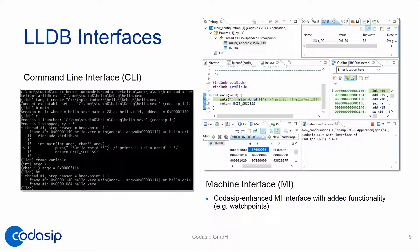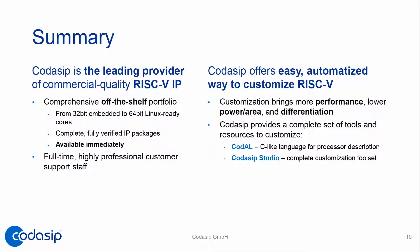A nice feature in LLVM 8 is that code in the CLI is nicely syntax-highlighted — variables appear in one color, keywords in another — making command-line debugging much easier. The second interface is MI, the machine interface, needed to talk to IDEs like Eclipse. The current status of LLDB MI in the master Git is not perfect — many features are missing. We enhanced it and added to it, and we are currently cleaning the code and preparing patches for upstream.